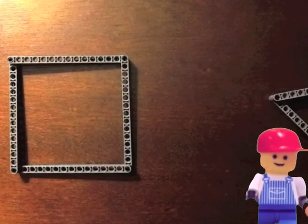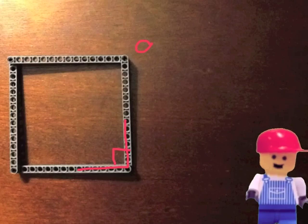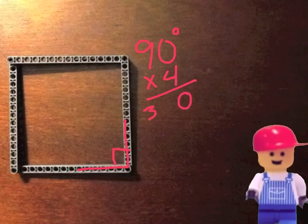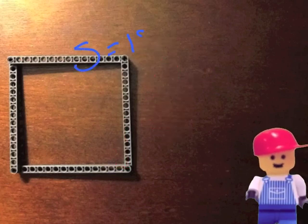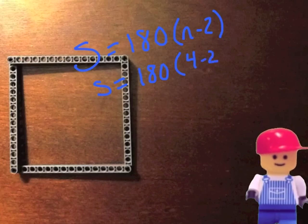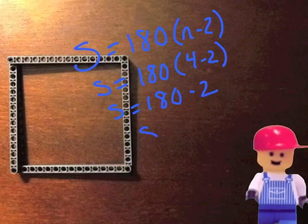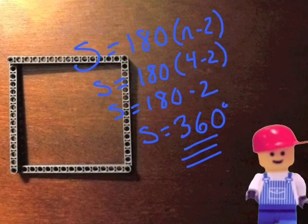If we look at a quadrilateral — in this case a square — it has four sides and four angles, and those four angles are all right angles. To find the total sum, 90 times 4 is 360 degrees. We can also prove this with our formula S equals 180 times the quantity N minus 2. This time N is 4, so S equals 180 times 2, which is 360 degrees — just like what we got when we measured. The four angles in a quadrilateral add to 360 degrees.